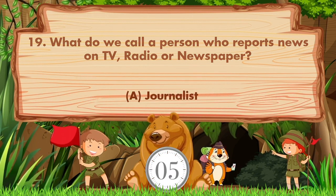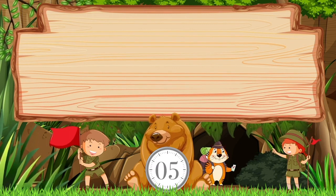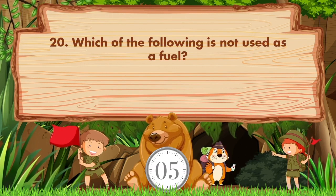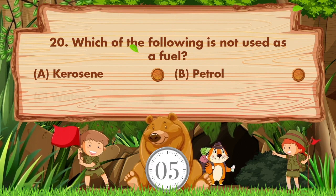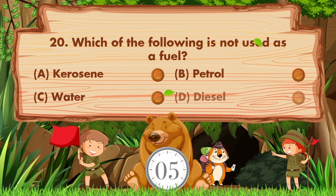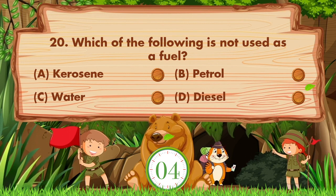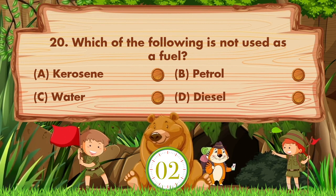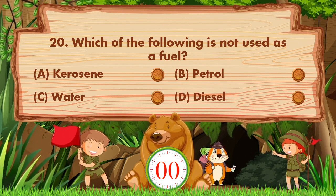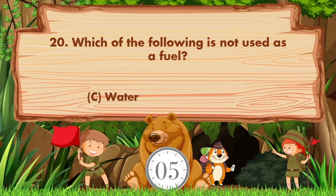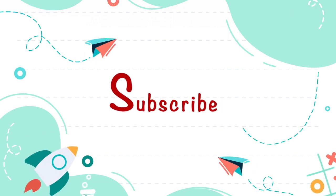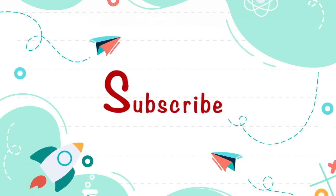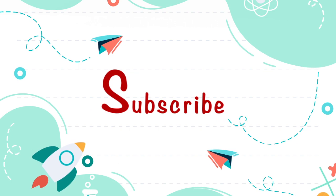Answer is option A, journalist. Which of the following is not used as a fuel? Option A kerosene, B petrol, C water, D diesel. Answer is option C, water.